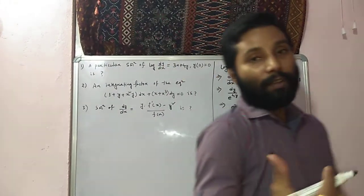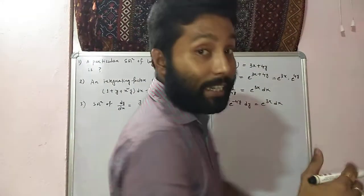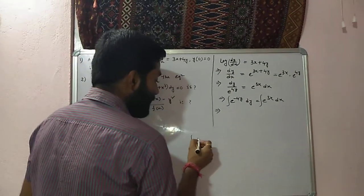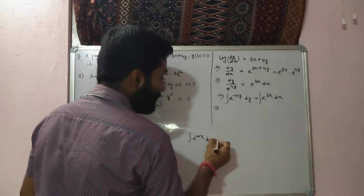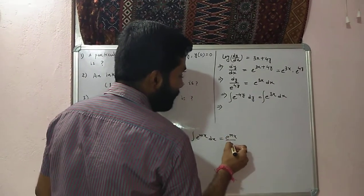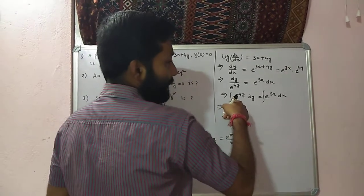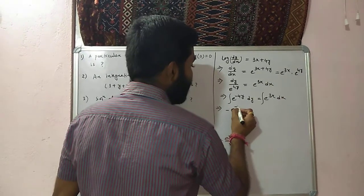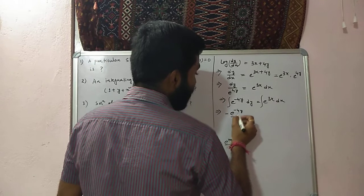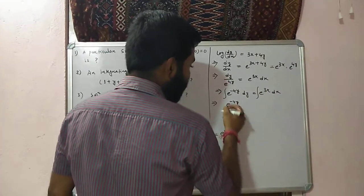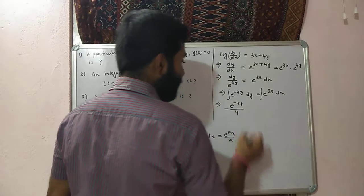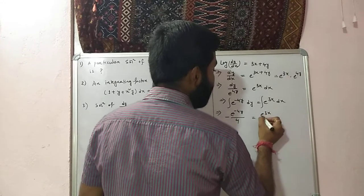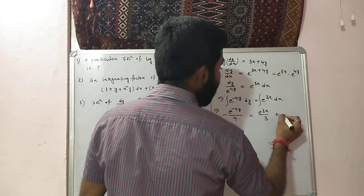The variable separable technique is: after separating the variables, you integrate on both sides. Now, integrating on both sides, we get: what is the integration of e to the power mx dx? Integration of e to the power mx dx is e to the power mx divided by m plus c. So, the integral of e to the power minus 4y dy gives minus e to the power minus 4y by 4. This is equal to e to the power 3x by 3 plus c.